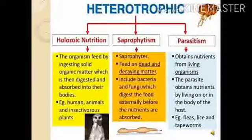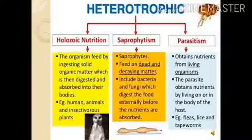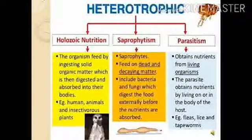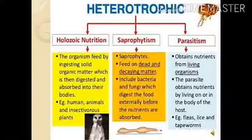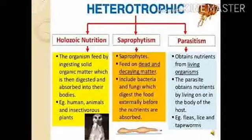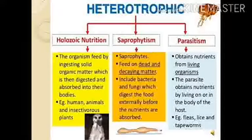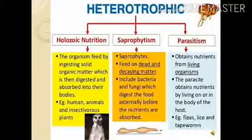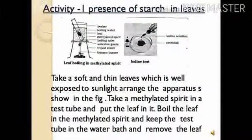Parasites obtain nutrients by living on the body of the host — like fleas, leeches, and tapeworms. Holozoic examples: humans, animals, and insectivorous plants. Saprophytic examples: bacteria and fungi. Parasitic examples: mosquitoes, fleas, leeches, and tapeworms. The key difference: parasites feed on living organisms, while saprophytes feed on dead and decaying organisms.